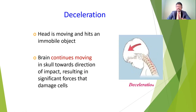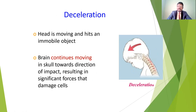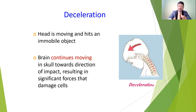Deceleration means while driving, the head is moving and hits an immobile object. For example, while driving, if you suddenly hit an object, you will get deceleration. In this condition, the brain continues moving in the skull toward the direction of impact, resulting in significant force that damages the cells. Because of both acceleration and deceleration, the brain gets cellular damage.